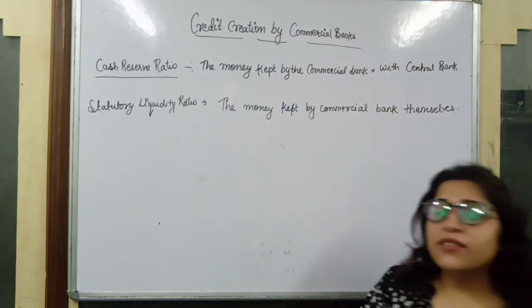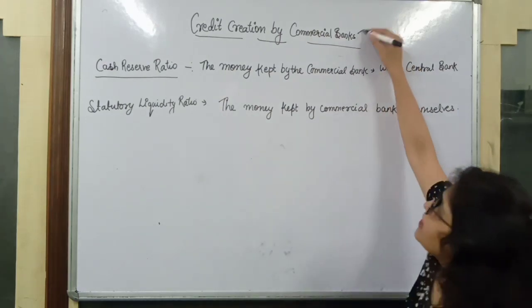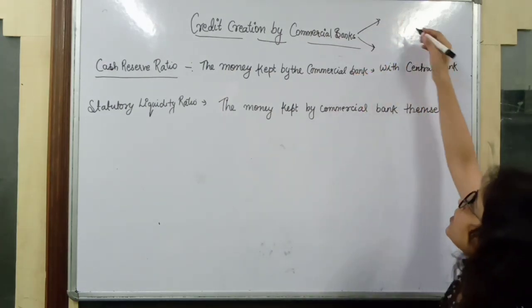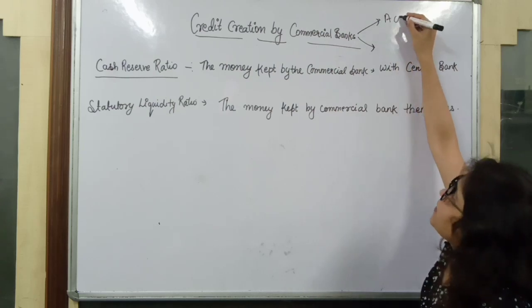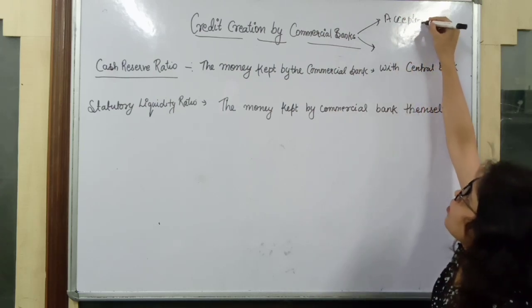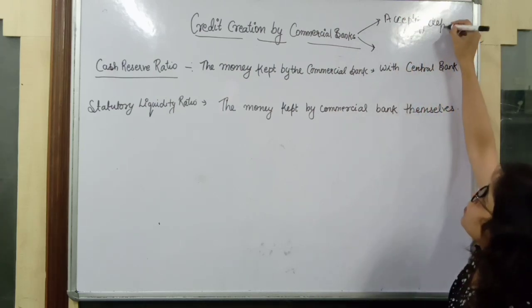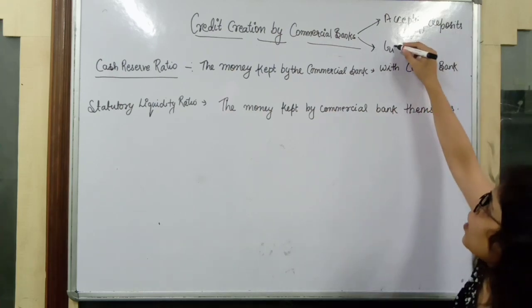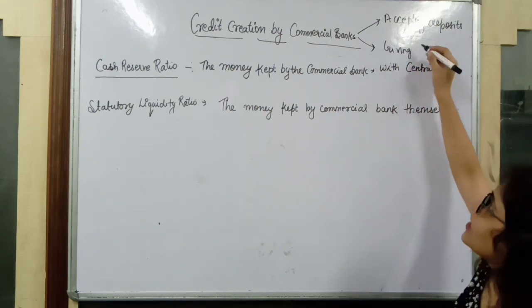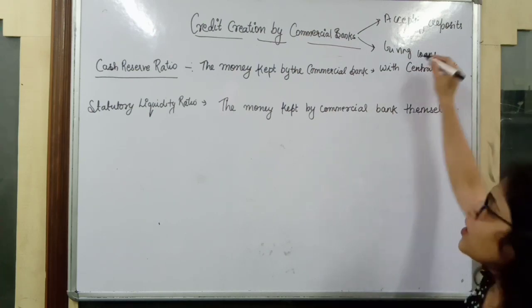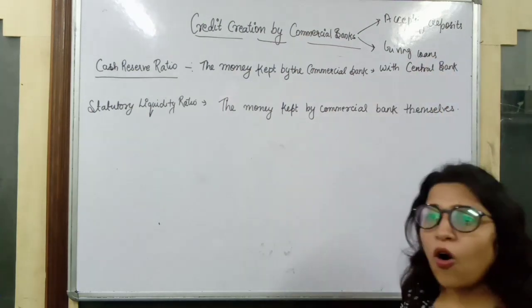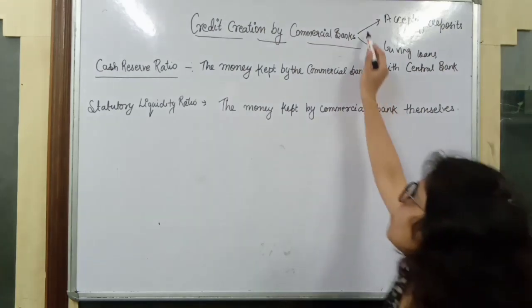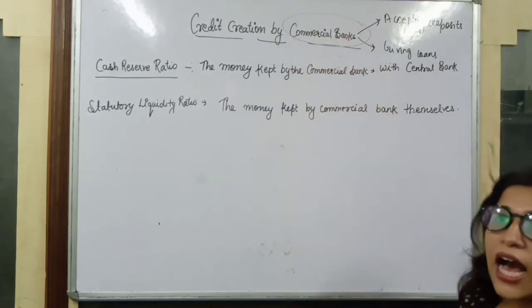Commercial banks basically have two functions. One is accepting deposits and the other is giving loans. If any organization has two functions — taking money from people and giving money as loans — then it is called a commercial bank.